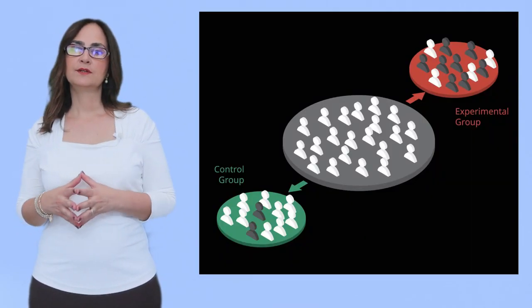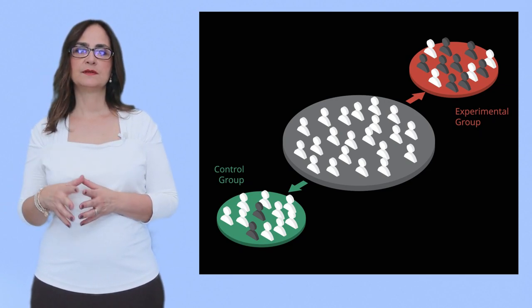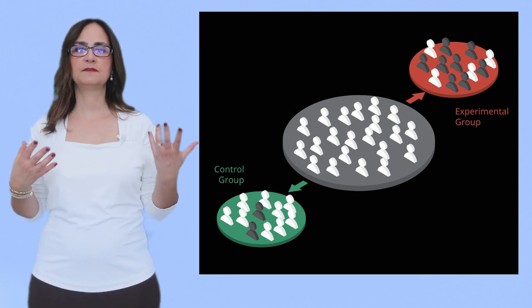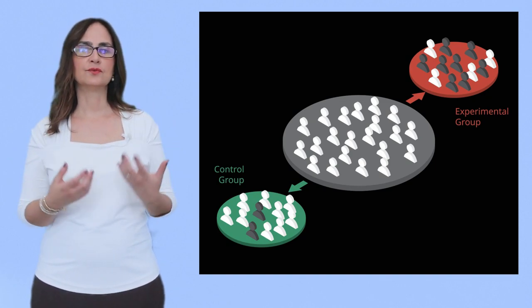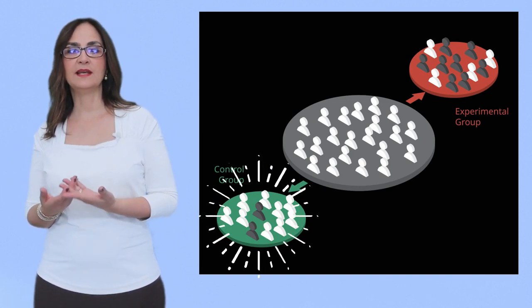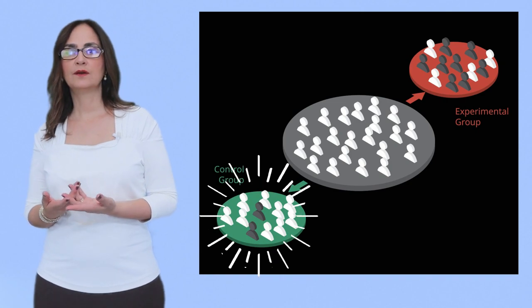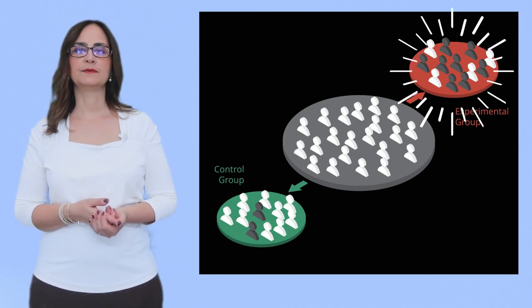People were randomized to one of two groups. This means that they had a 50-50 chance of getting either the control group, which was a form of enhanced usual care, or the iWatch intervention. Both groups received a copy of my book, My Opioid Manager, and a relaxation CD.